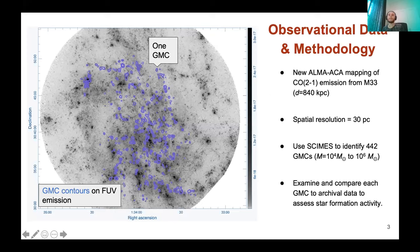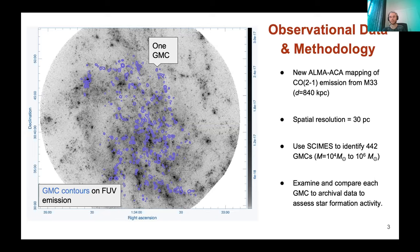Here on the left, we are showing you a picture of M33 in the far-UV band, and on top in blue we are showing you the contours of the giant molecular clouds located in the new ALMA ACA data in the CO(2-1) line. Going to the resolution of ALMA, which translates to 30 parsec spatial resolution, and the uniqueness of M33, we were able to identify almost 450 structures using the SCIMES package, which uses dendrograms to find positions and boundaries of the clouds and estimate some of their properties. Once we have the positions and contours of the clouds, we can locate them in different bands of the electromagnetic spectrum and use archival data to assess star formation activity using the corresponding tracers.